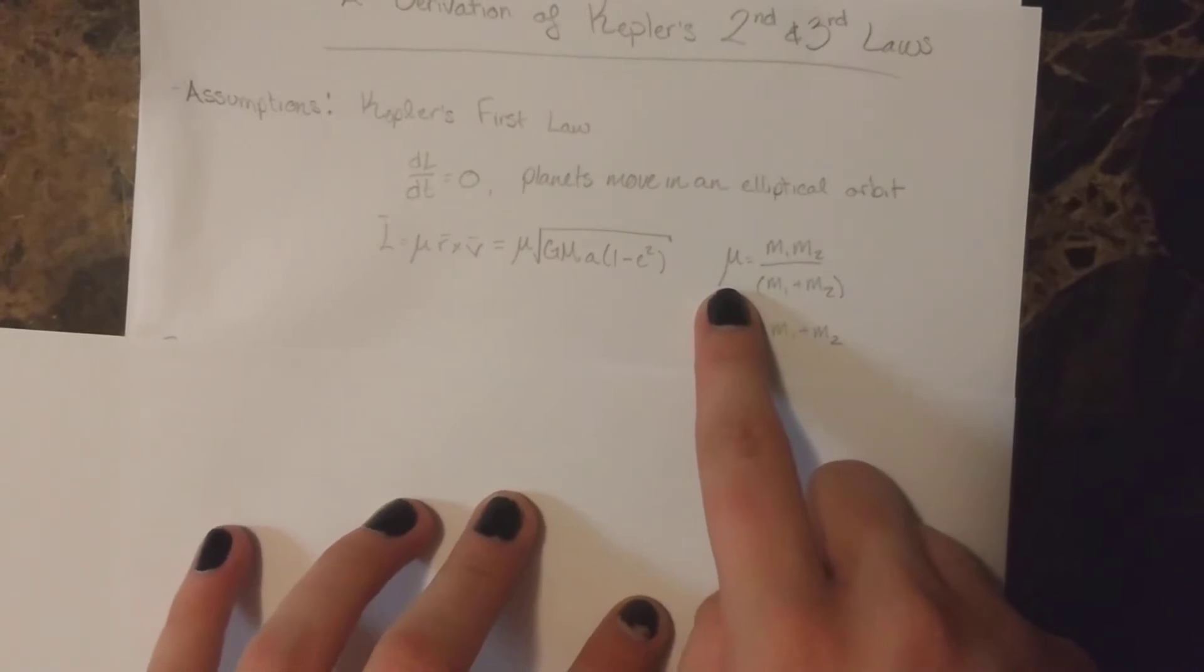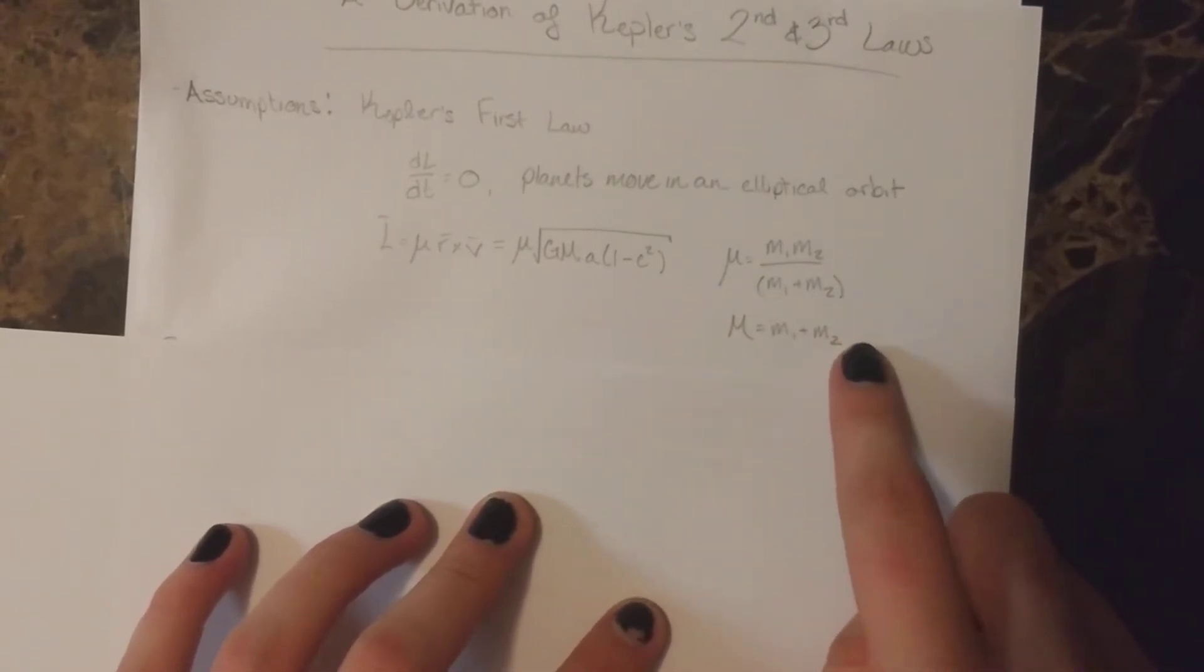The reduced mass mu is shown here, and big M is the sum of our two masses.